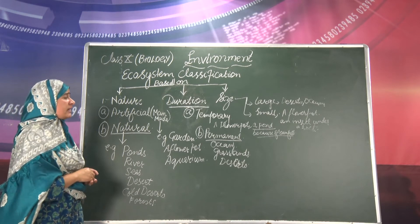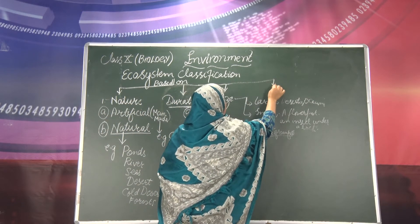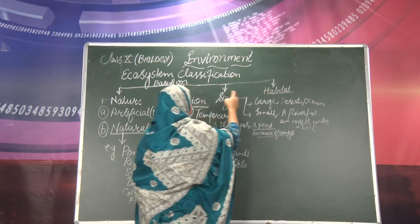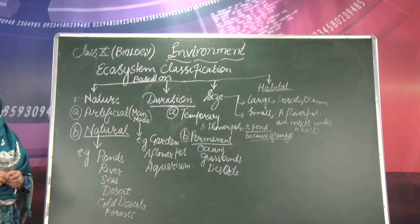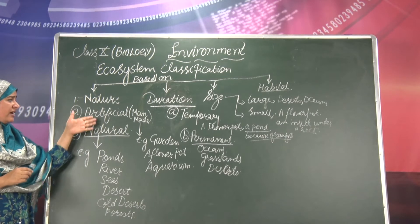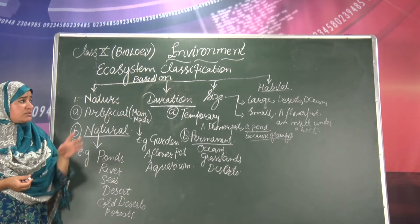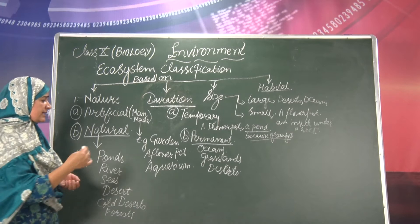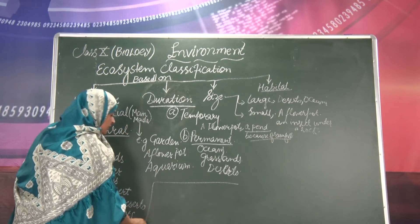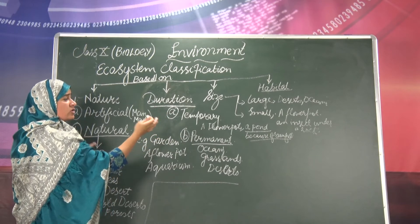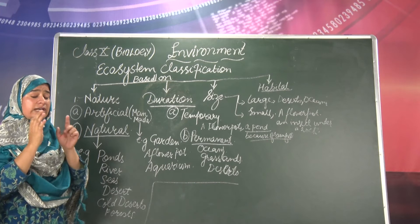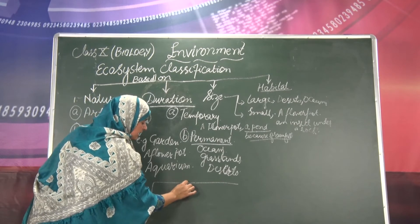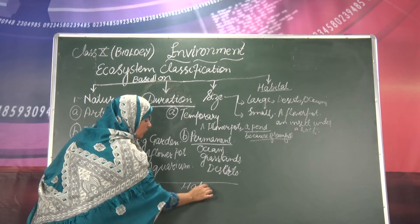Apart from these three, there is another important classification of ecosystem based upon habitat. I will take it last because it is comparatively vast. I would like you to recapitulate all kinds of ecosystems together so it gives a clear picture. Now I am taking the ecosystem that is based upon habitat.